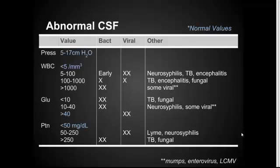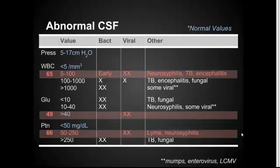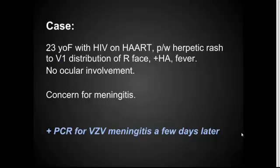Mapping her numbers onto this table: her white blood count was 65, a slightly elevated count concerning for early bacterial or viral infection. Her glucose was normal at 49. Her protein was moderately elevated at 66, which viral infection can have. Overall, her results were concerning for viral infection — and she did end up having a positive PCR for varicella meningitis, which came back a couple of days later.